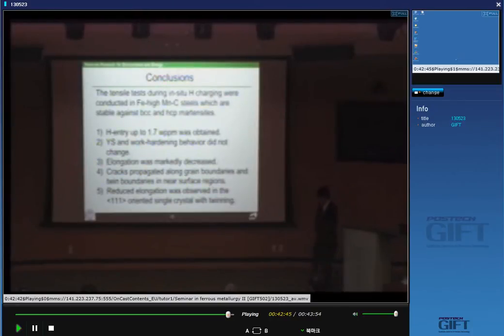What we can do with this kind of information? If you want to reduce the degradation of elongation by hydrogen entry, what you can do is at least control the twinning. However, further study is necessary for hydrogen deformation twin interaction to conclude.